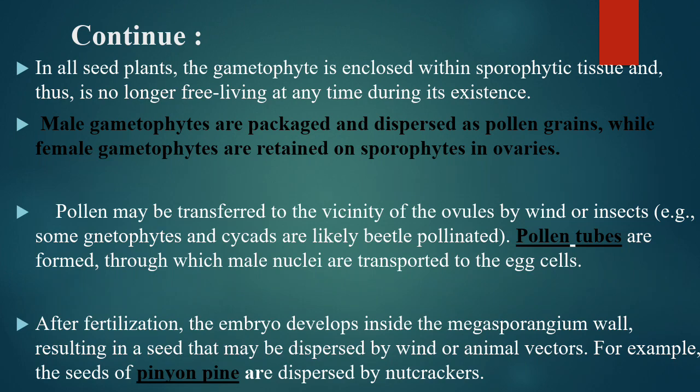In all seed plants, the gametophyte is enclosed within sporophytic tissues and is no longer free-living at any time during its existence. Male gametophytes are packaged and dispersed as pollen grains, while the female gametophytes are retained on the sporophyte in ovaries.